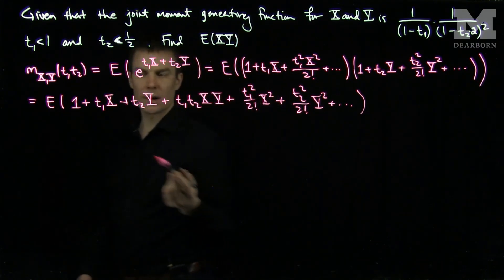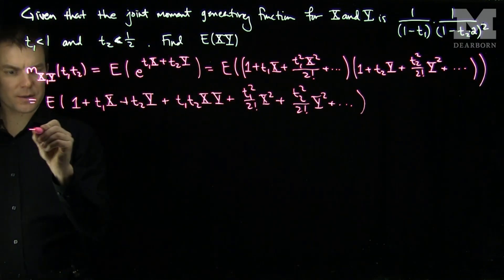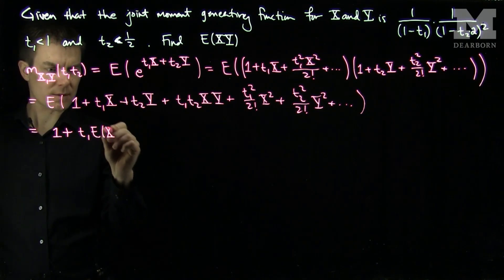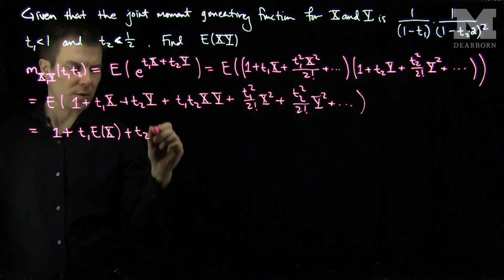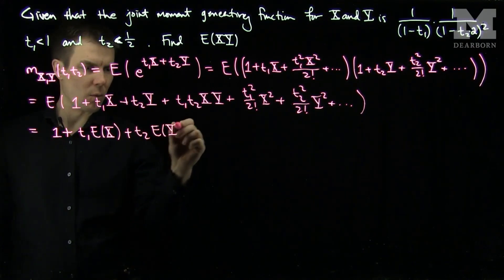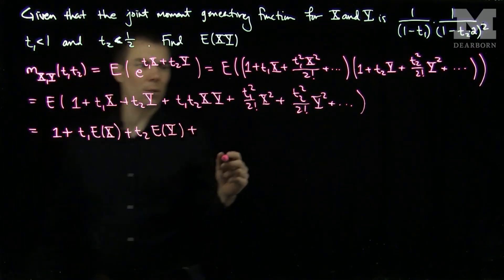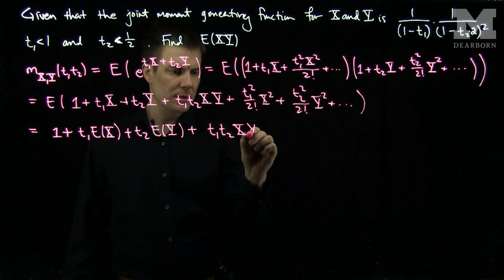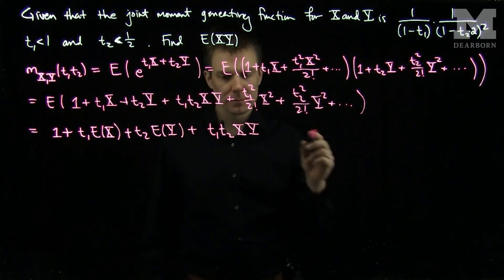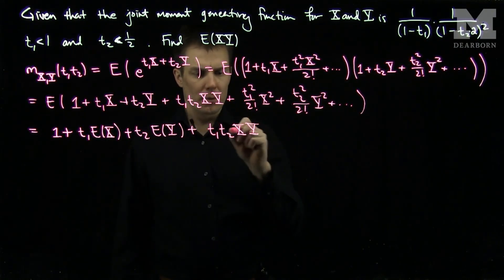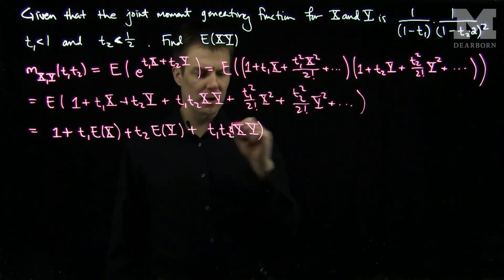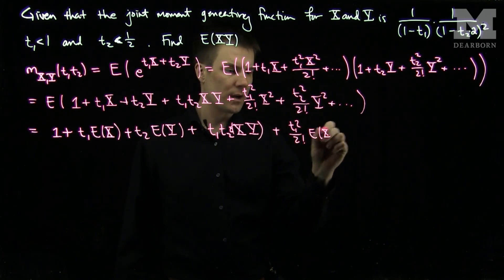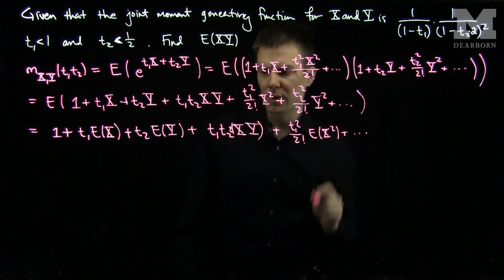If we continue to simplify this, this is going to be 1 plus t1 times the expected value of x, plus t2 times the expected value of y, plus t1*t2 times the expected value of x*y, plus t1 squared over 2 factorial times the expected value of x squared, and so on.